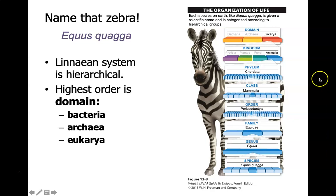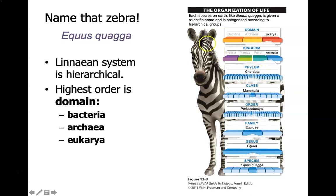Our largest groups are the domains: bacteria, archaea, and eukarya. The eukaryotic domain is broken down into kingdoms — these are large groups of eukaryotes: animals, fungi, plants, and protists, which are single-celled eukaryotic organisms. Then we get increasingly smaller groups. Within the animals we have the phylum, such as chordates — organisms that have a spinal cord and backbone. Then we have classes, such as mammals. There would be other classes like reptiles and birds. Then we get our order and family, getting increasingly more specific all the way down to our species name.